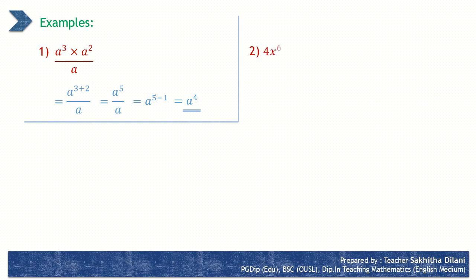Let's consider another example: 4 x to the power 6 divided by 2 x to the power 4. It can be written as 4 x to the power 6 over 2 x to the power 4. Both 4 and 2 can be divided by 2: 4 divided by 2 is 2, 2 divided by 2 is 1. So it becomes 2 x to the power 6 over x to the power 4. Since the bases are equal, their indices are subtracted: 2 x to the power 6 minus 4. So the answer is 2 x to the power 2.